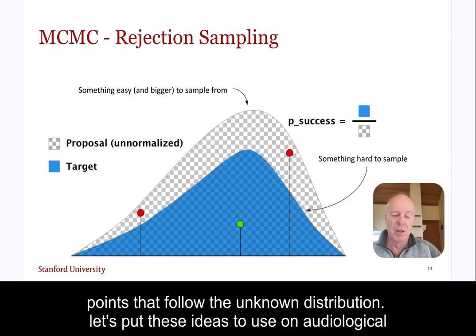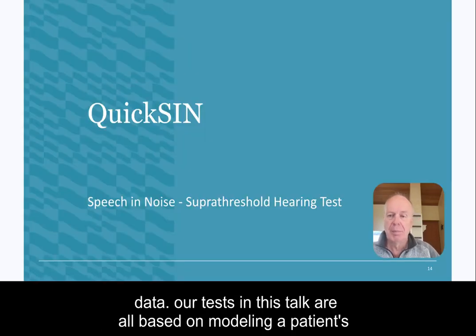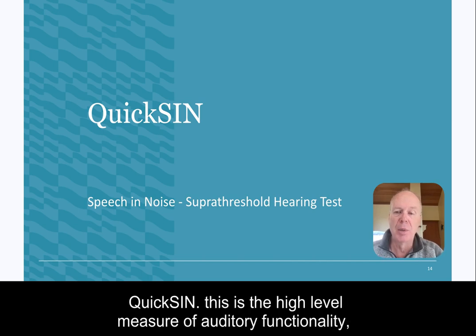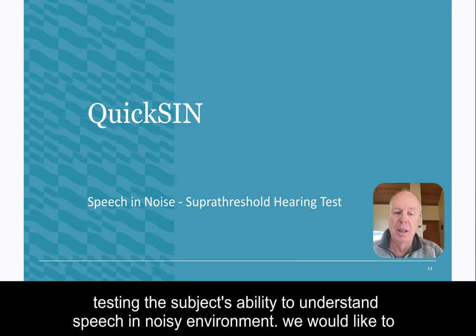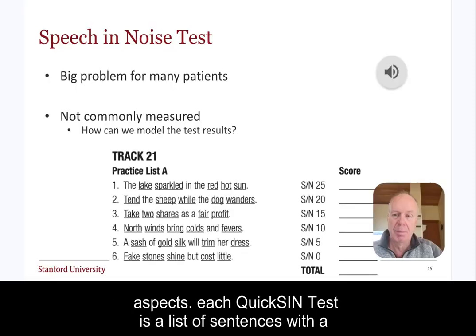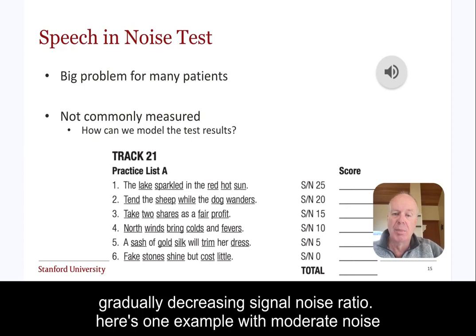Let's put these ideas to use on audiological data. Our tests in this talk are all based on modeling a patient's performance on a super-threshold speech recognition test known as QuickSyn. This is a high-level measure of auditory functionality, testing the subject's ability to understand speech in a noisy environment. We would like to connect our patient's thresholds to speech and noise performance and characterize the unknown aspects. Each QuickSyn test is a list of sentences with a gradually decreasing signal-to-noise ratio.